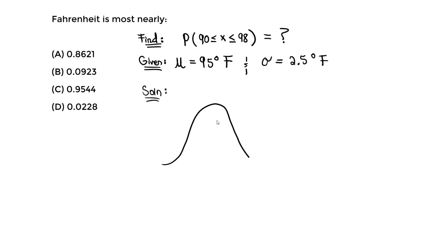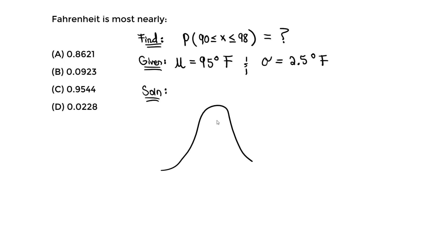We have a curve that should be symmetric — just know that a normal distribution curve is always symmetric. At the middle is going to be the average, which is mu = 95. For the standard curve, mu is denoted using Z-scores as X. At the middle, the Z-score is always zero — that equals zero.